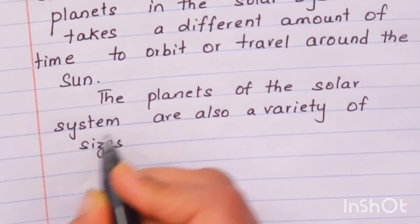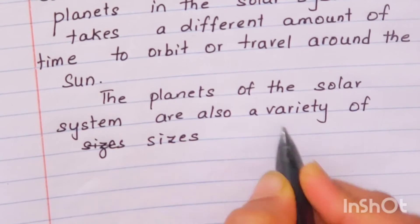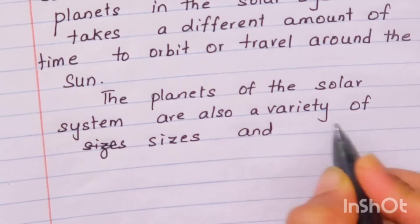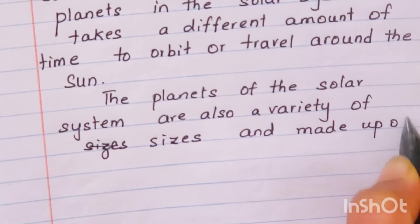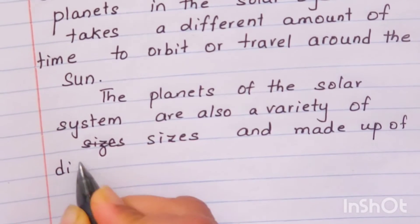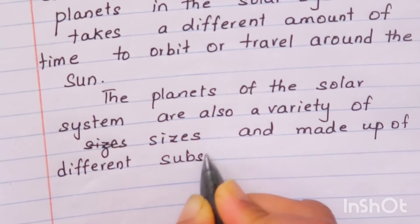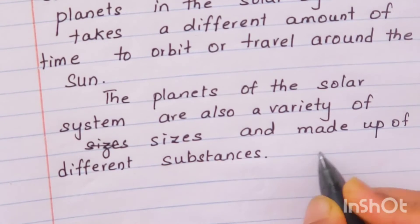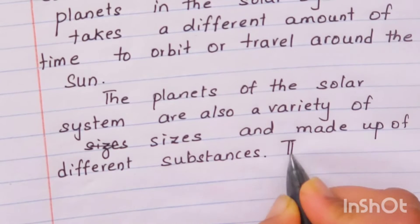The planets of the solar system are also a variety of sizes. All the planets vary in sizes. Such as earth is of different size, Jupiter is of different size.